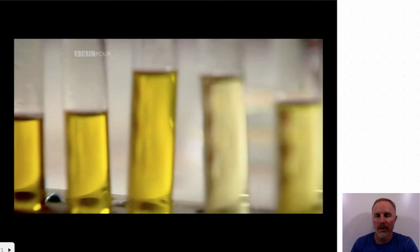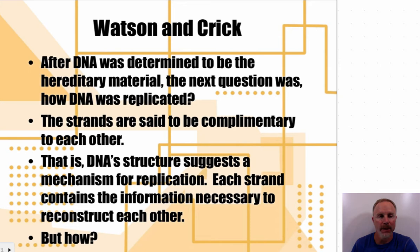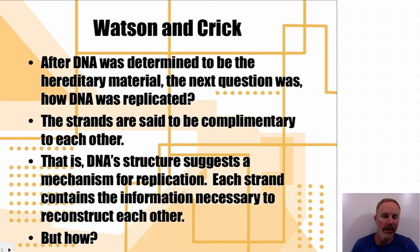Here's a video we'll watch that shows the Meselson-Stahl experiment. After Watson and Crick determined that DNA was the hereditary material, the main question became: how is DNA replicated? The two strands are said to be complementary to one another — if one strand reads A, T, C, G, the other reads T, A, G, C.